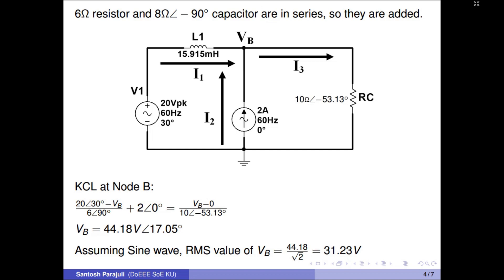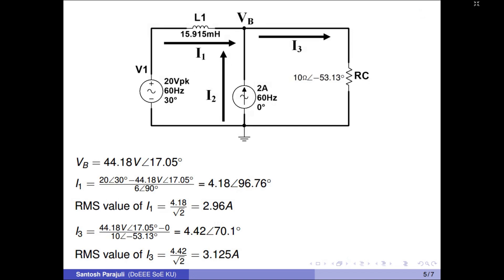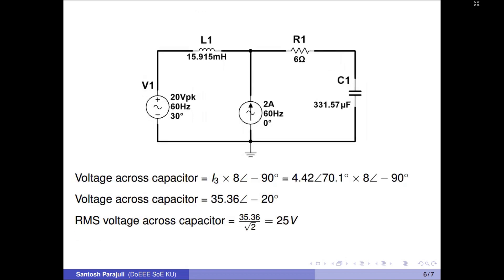This yields a potential of node B of 44.18 volts angle 17.05 degrees. Assuming sinusoidal variation of the input signal, the RMS value of VB is 31.23 volts. After finding VB, I1 and I3 are computed as 4.18 amperes angle 96.76 degrees and 4.42 amperes angle 70.1 degrees. To find the voltage across the capacitor, current through capacitor I3 should be multiplied by the resistance of the capacitor. This yields an RMS voltage of 25 volts across the capacitor.